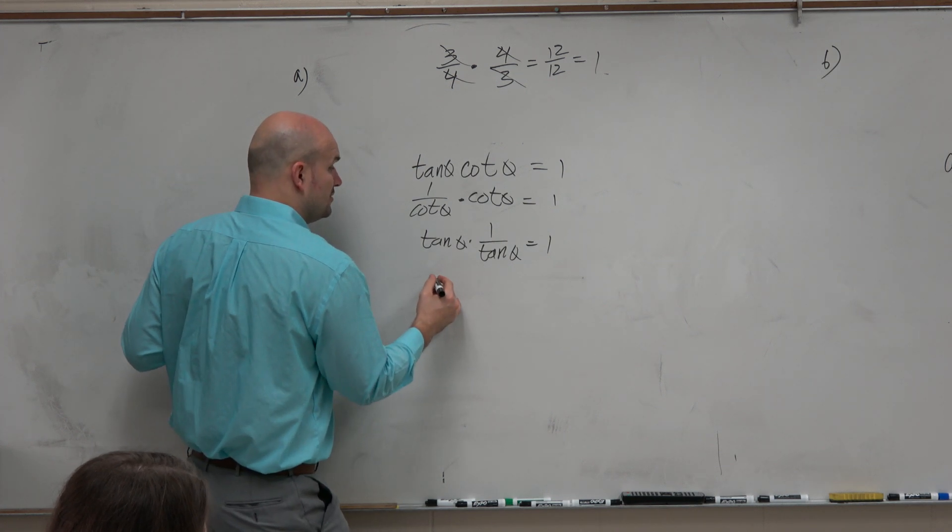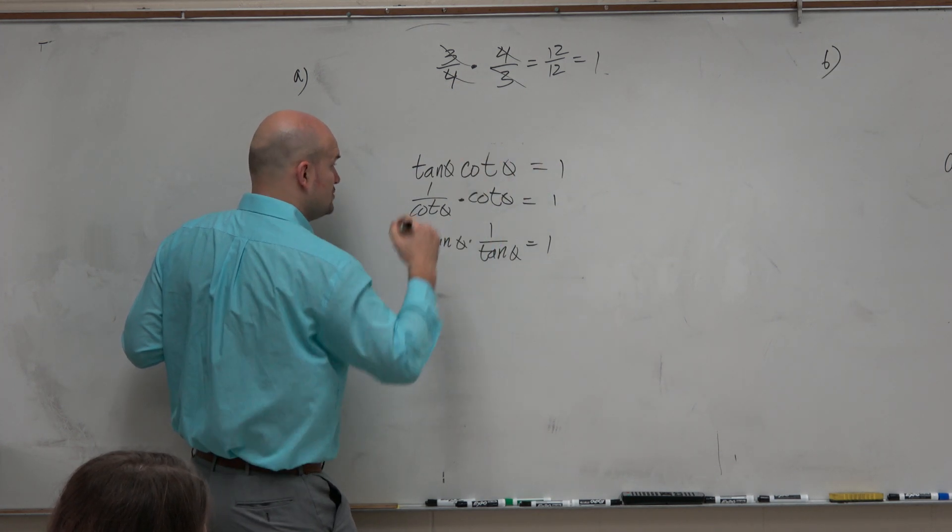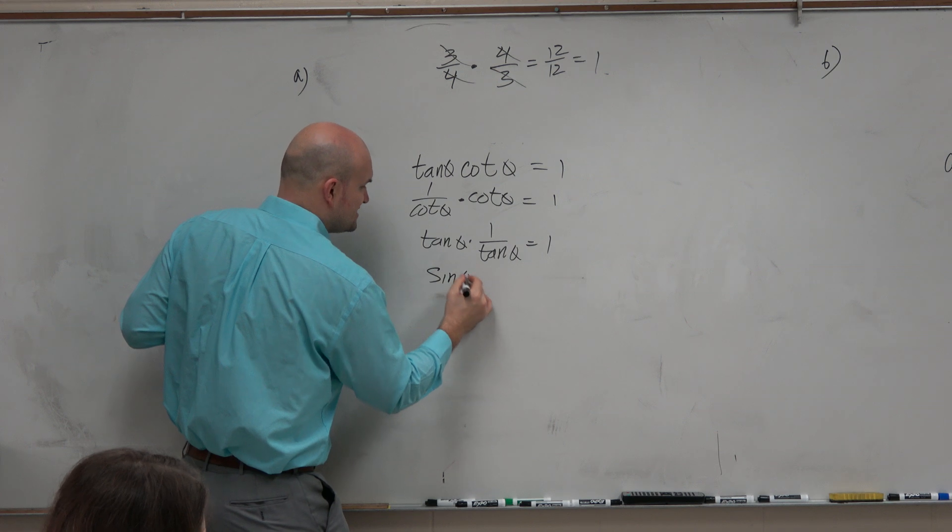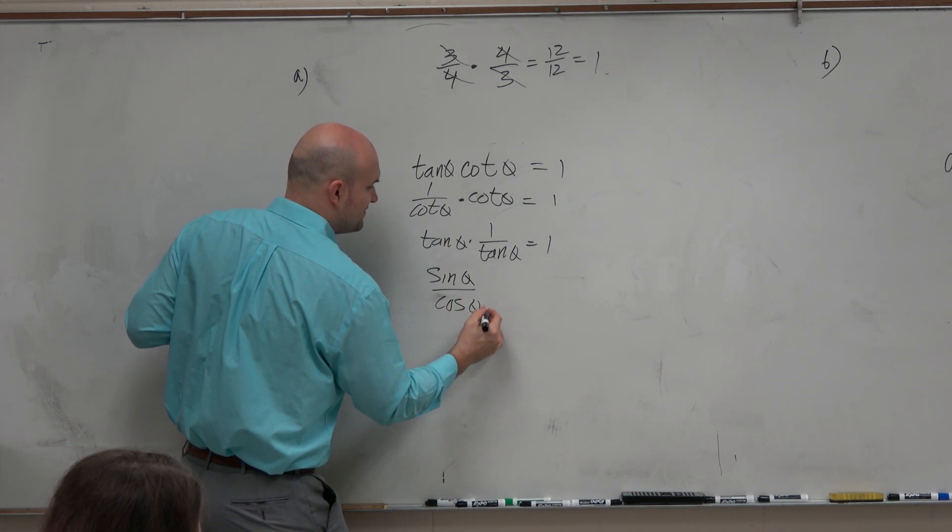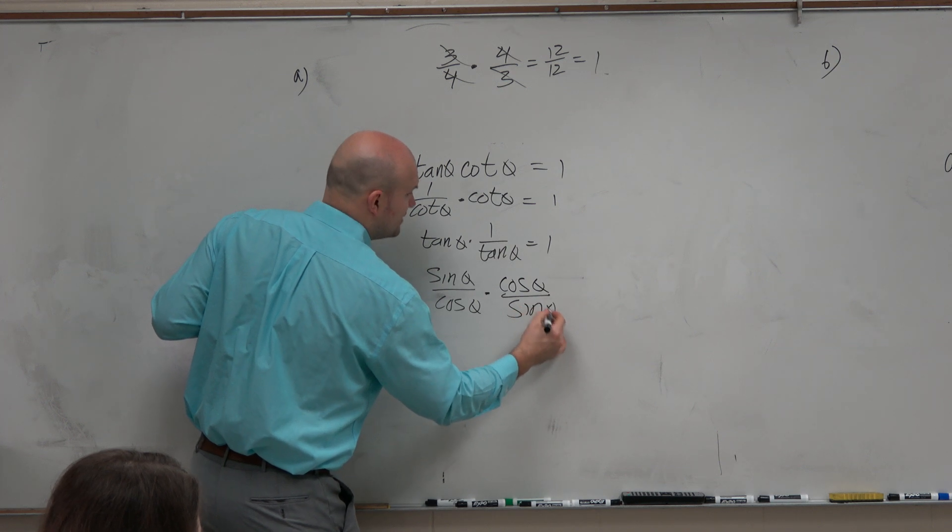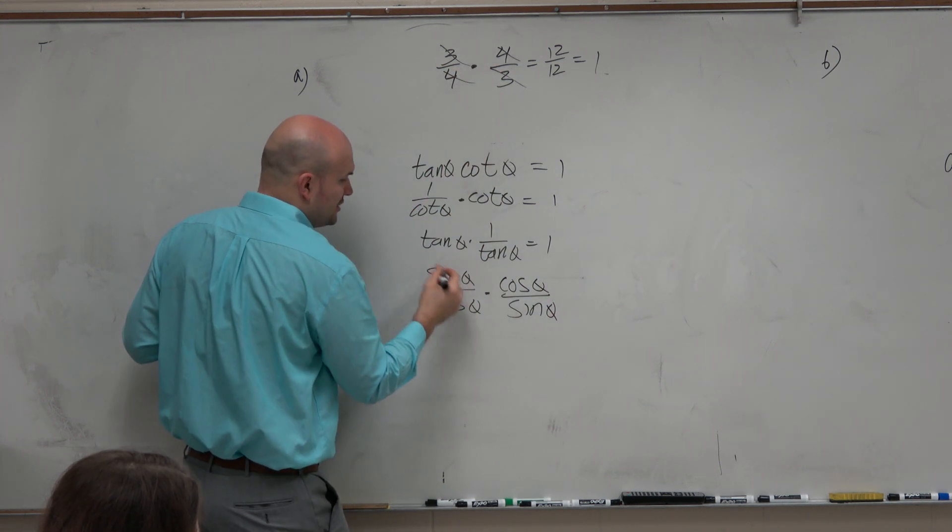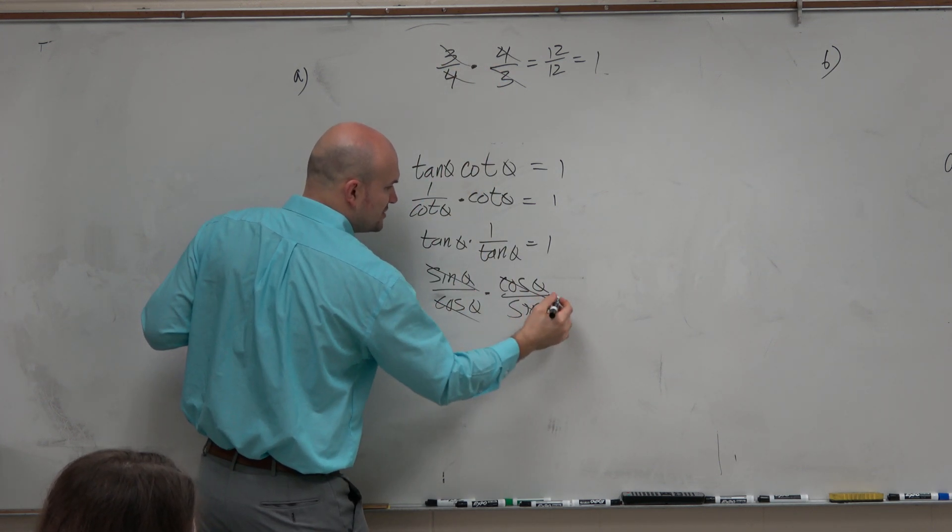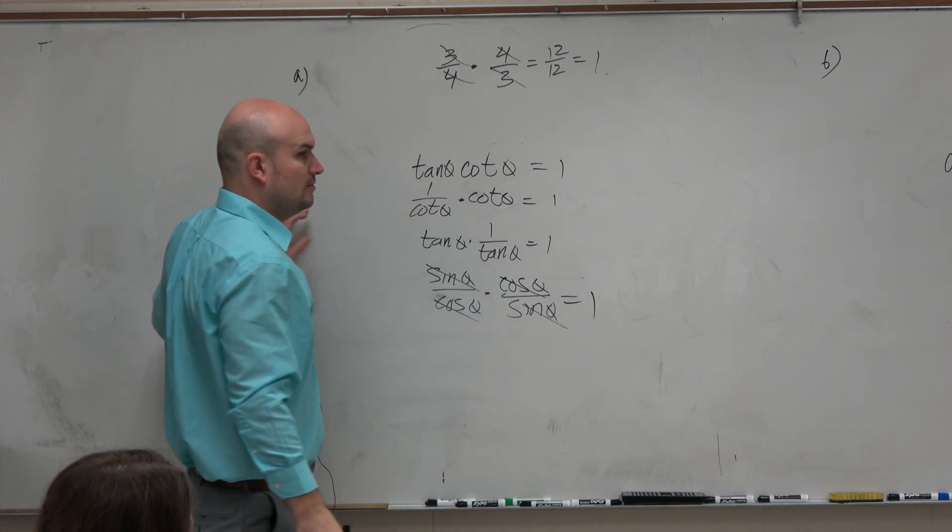Or we could even do the quotient identities. We could write this as sine of theta over cosine of theta times cosine of theta over sine of theta. And then using this same understanding, we know everything is going to divide out to 1.